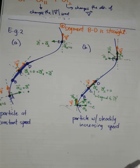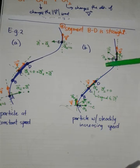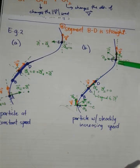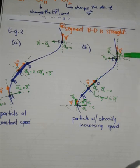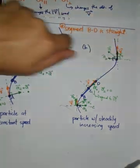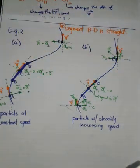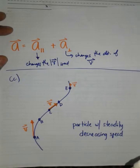It changes direction because there's A perpendicular. At this particular point, if there's no A perpendicular, it won't go straight. But because there's a force pulling it here, that's why it curves.